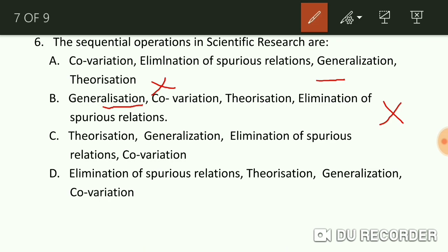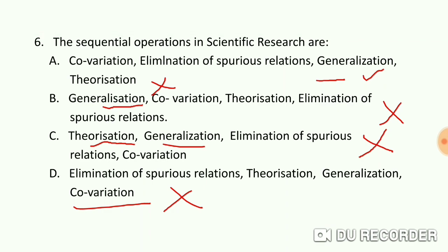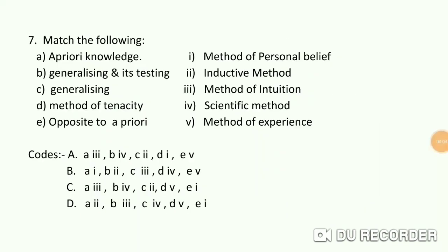Option C: theorization, generalization, elimination of spurious relations, and co-variation — again, theorization is placed first and co-variation last, which is clearly wrong. Option D: elimination of spurious relations, then theory development, then generalization, then co-variation — the steps are in the wrong sequence. The only correct option remaining is option A. Let us check the answer — the answer is A.